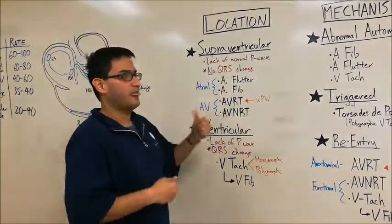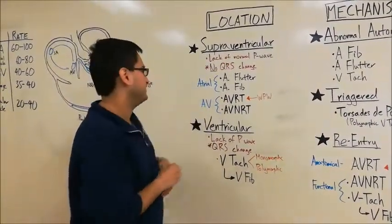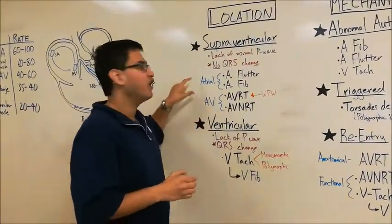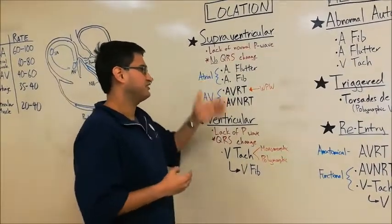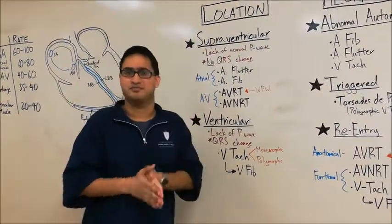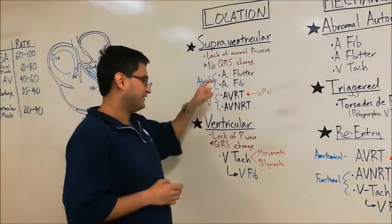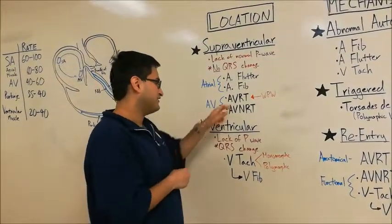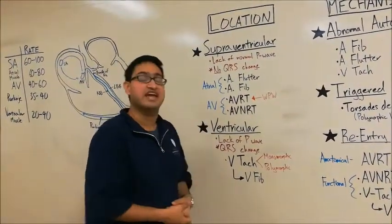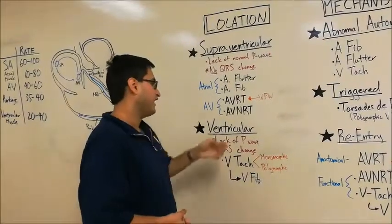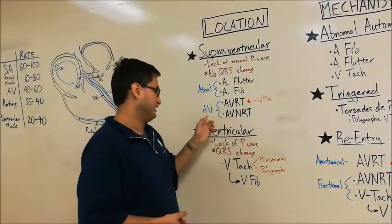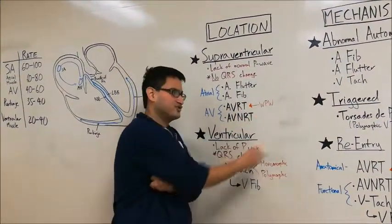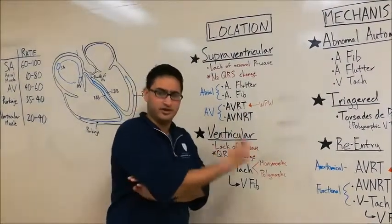Now, supraventricular means above the ventricle. That could mean the atrial area or atrioventricular. So these are the two subcategories of location within supraventricular. Now here I've listed a few examples that fall within each bucket. We have AFlutter and AFib falling under atrial, as the name suggests. And we also have AVRT, which is atrioventricular reentrant tachycardia, and atrioventricular nodal reentrant tachycardia under AV. And note that AVRT is often associated with Wolff-Parkinson-White syndrome, which we'll talk a little bit about later on in this discussion.